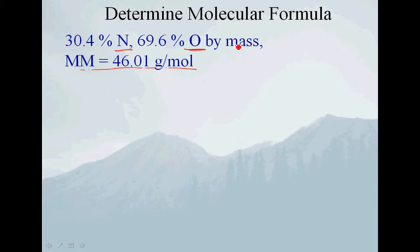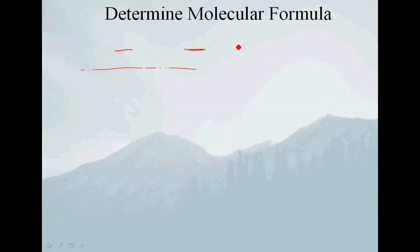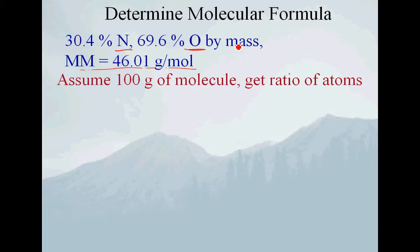To find the empirical formula, we need to know the mole ratio. We're given mass percents, and it's easy to get a mole ratio knowing the mass ratio if we do one simple thing. There are a couple of different ways of doing these kinds of problems, and the most straightforward approach is to assume we have 100 grams of the molecule in question.